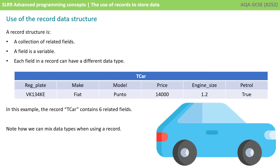We use it to collect together variables that are related to each other. In this example, we have a record that we've called TCAR containing six related fields. You could call this record whatever you want. The capital T is a bit of a standard convention in many languages to start the name for a record with a capital letter T. The important thing is to see that we've mixed and matched six different variables with different data types and collected them together under a generic record structure called TCAR.